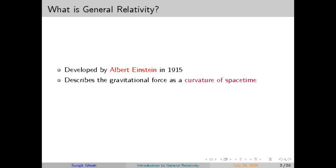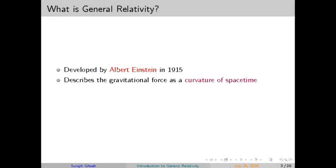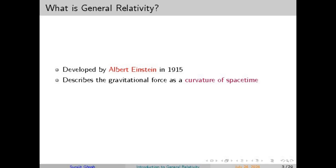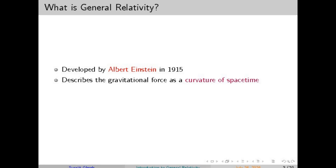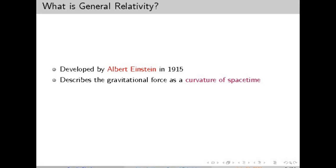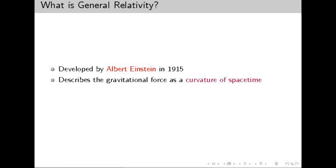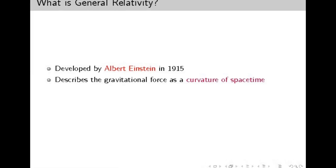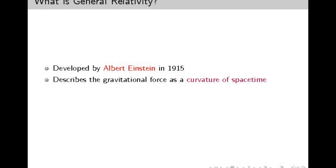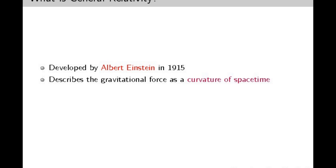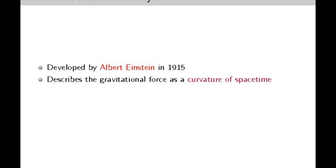Key figures like David Hilbert, Carl Schwarzschild, and Arthur Eddington played crucial roles in the development and validation of Einstein's theory. Schwarzschild found the first exact solution to Einstein's field equations, describing the space-time surrounding a spherical mass, leading to the concept of black holes. Eddington's 1919 expedition to observe a solar eclipse confirmed the bending of light predicted by general relativity, catapulting Einstein to worldwide fame.